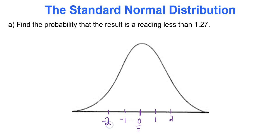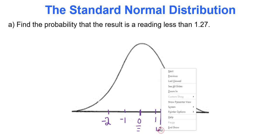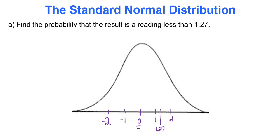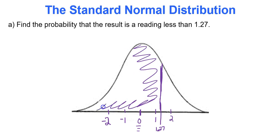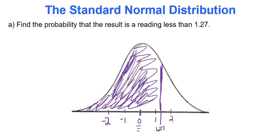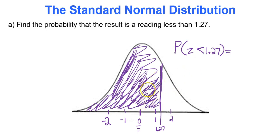We need to find the area under the curve to the left of 1.27, since we want the probability less than 1.27. Mark that z-score and shade the correct region. The probability that a test score is less than 1.27 requires the table. We need to find the area to the left of 1.27 — remember, area to the left is exactly what the normal probability table tells you.